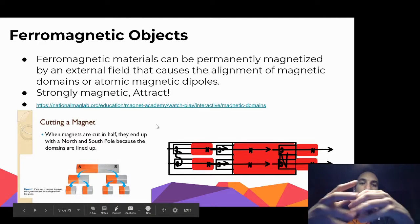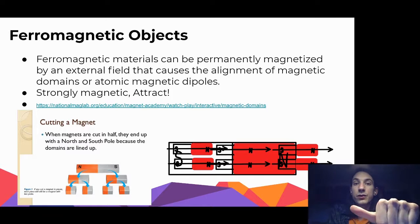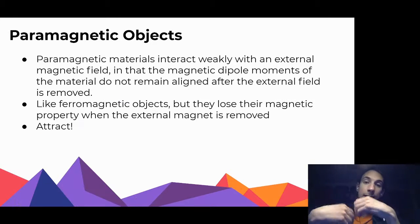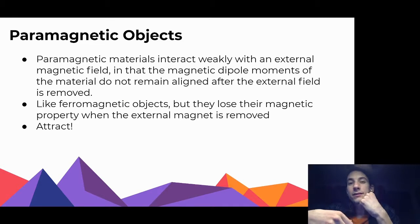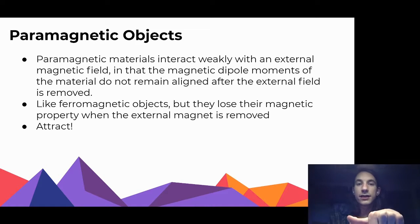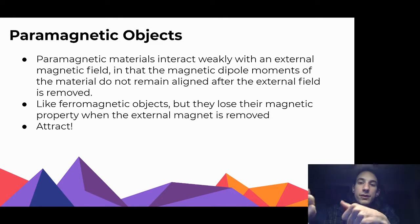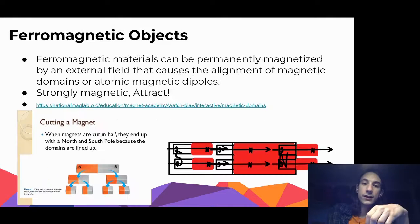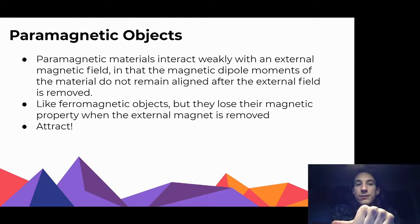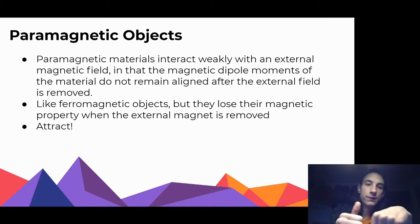Ferromagnetic objects, when you bring a magnet near them, those little dipoles will go towards the magnet and they will stay that way - they'll remain aligned and become a magnet. In the same vein, we have paramagnetic objects. They do the same thing when a magnet is brought near them - they will align themselves. But as soon as we bring the magnet away, they'll go back to doing their own thing. They will not remain aligned after the field is removed.